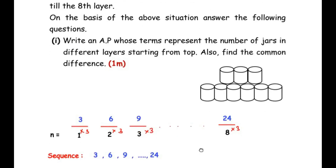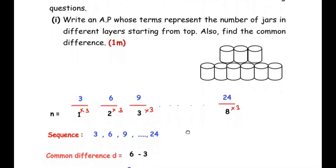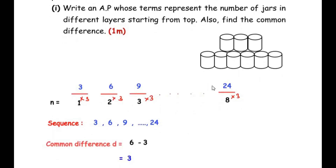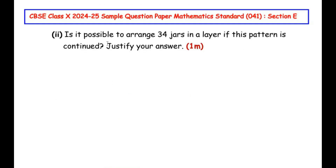So the AP or sequence is 3, 6, 9, ... continuing till 24. Now we also need to find the common difference. The common difference is the second term minus the first term: 6 minus 3 equals 3. So the common difference is 3.